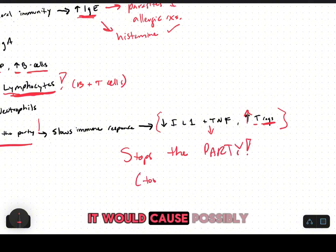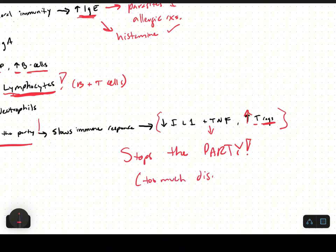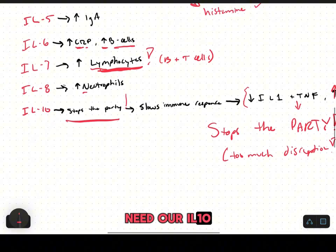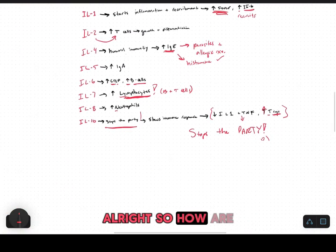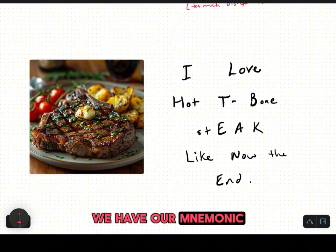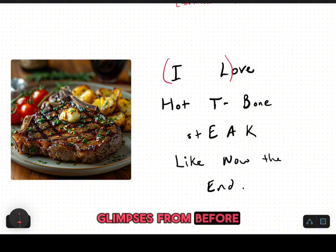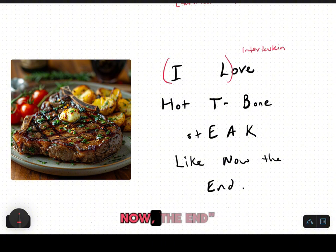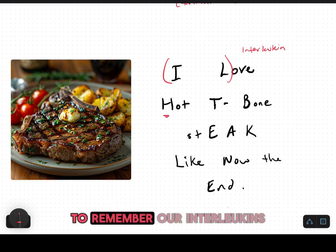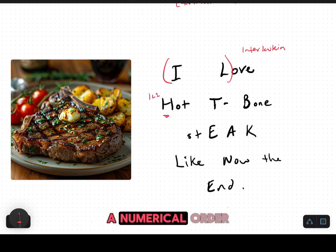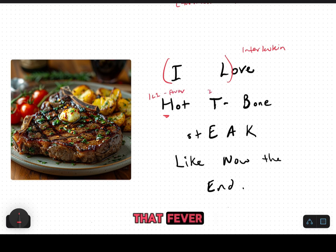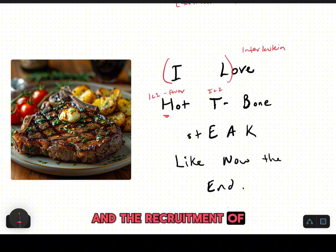Too much inflammation and too much of an inflammatory response is not good — it could cause an autoimmune disorder. Too much disruption is dangerous, so we need interleukin ten. So how are we going to remember all of this? We have our mnemonic. Look at the steak and remember those flash photos. The mnemonic is: I love hot T bone steaks like now, the end — starting in numerical order.